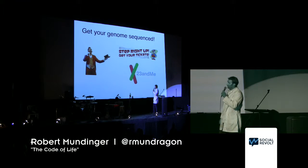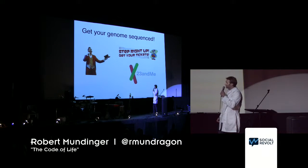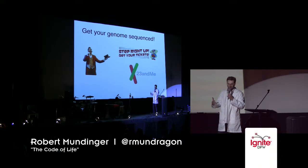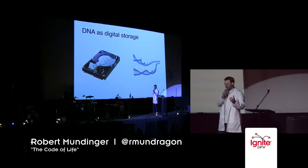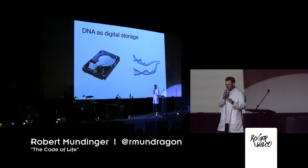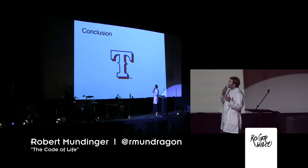Now we can get our personal genome sequenced — which is kind of creepy — but you can see what diseases you're susceptible to, whether your parents are actually your parents, that type of thing. We're also now using DNA as digital storage: we can hold all of Google and Facebook's data in one gram of DNA. That's how incredibly our DNA is structured. That's my talk. Go Rangers.